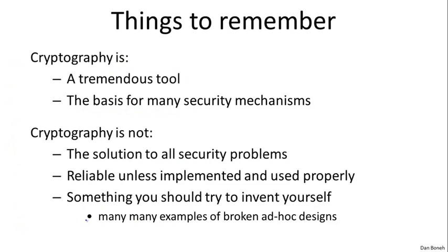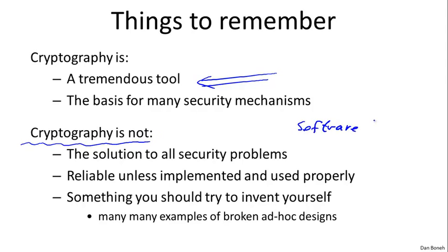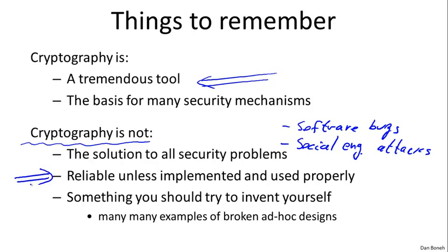The last point I want to make is that there are a couple of important things to remember about cryptography. First, cryptography is a fantastic tool for protecting information in computer systems. However, it's also very important to recognize that cryptography has its limitations. Cryptography is really not the solution to all security problems. For example, if you have software bugs, cryptography is often not going to be able to help you. Similarly, if you're worried about social engineering attacks — where the attacker tries to fool the user into taking harmful actions — cryptography is very often not going to help you.